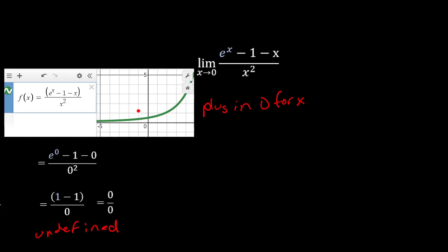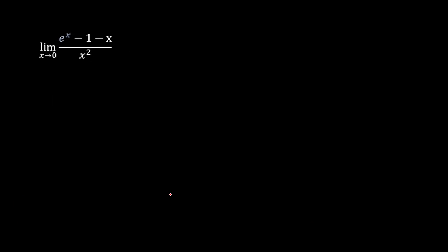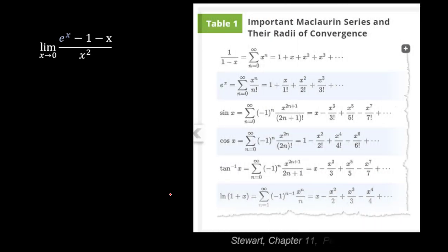Specifically, we could consider subbing in a Taylor series for this e to the x value up here. Change this into a polynomial instead of a transcendental function. So to do that, rather than actually come up with our own Taylor series, we can appeal to already known Taylor series. Specifically, we have a table here that you can find in Stewart Chapter 11, page 768. And it conveniently provides this Taylor series for e to the x.